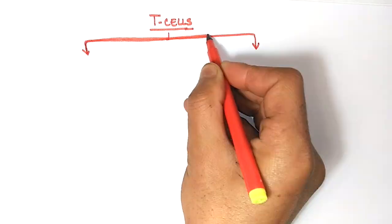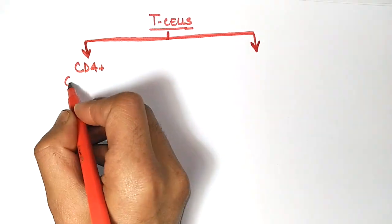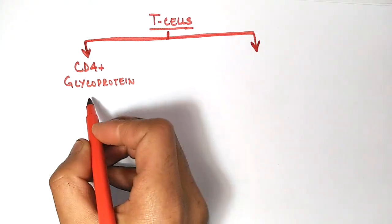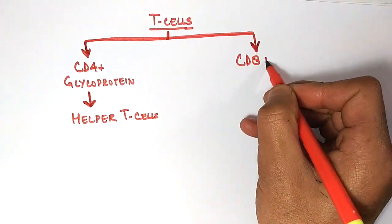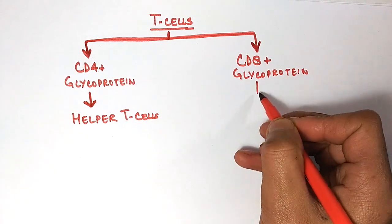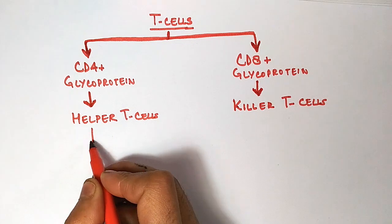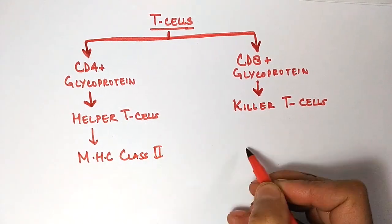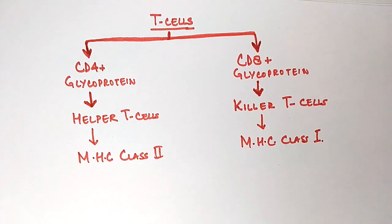We differentiate these T cells based on glycoproteins present on their surface. If the cell has glycoprotein CD4 positive, we call them helper T cells, while cells which have CD8 glycoprotein on their surface we call killer T cells. Both cells present different types of MHC class molecules: helper T cells present MHC class II while killer T cells present MHC class I. And in this Type 4 hypersensitivity reaction we have these helper T cells that mediate this reaction.